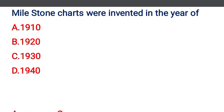Next question: milestone charts were invented in the era of — option A: 1910, option B: 1920, option C: 1930, option D: 1940. The correct answer is option C: 1930.